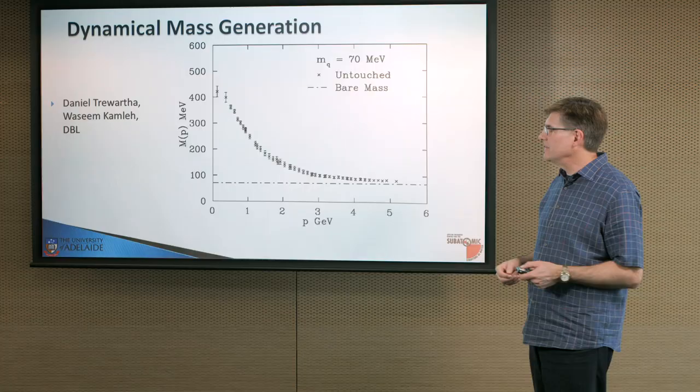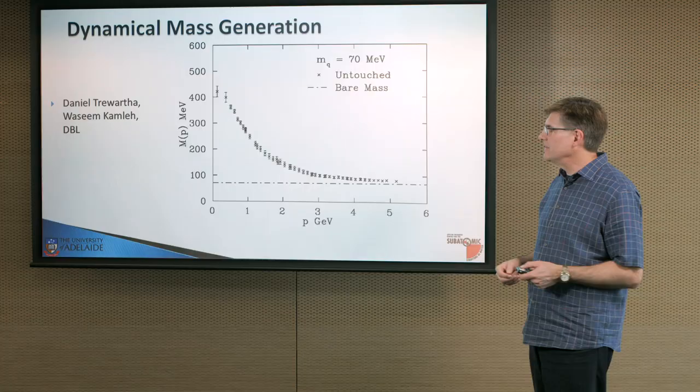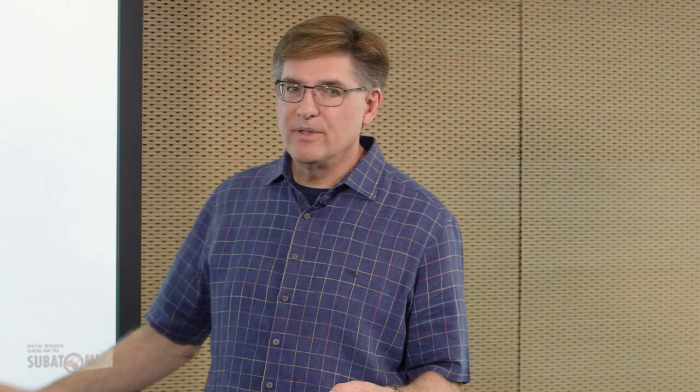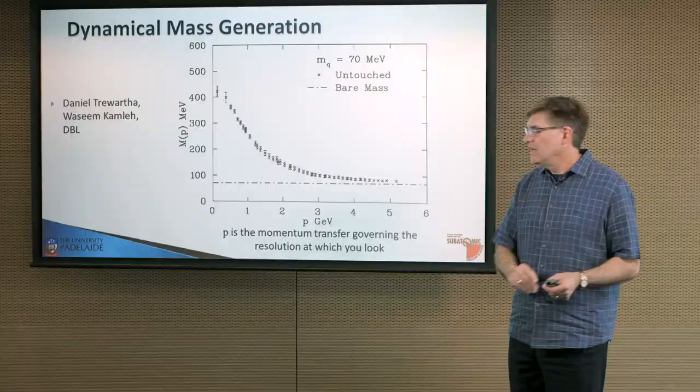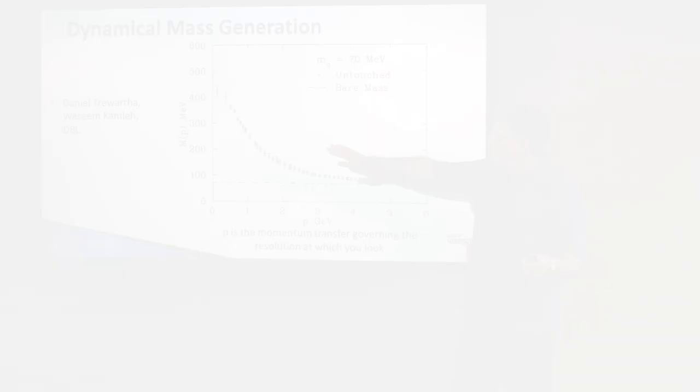Here's a plot where on the x-axis I'm using a measure of momentum transfer that governs the resolution at which you look. If you've seen a Fourier transform, you'll know that large momentum correspond to short distances. So we've got short distance here, we've got large distances here, and you can see on the y-axis we're looking at the apparent mass of a quark as it sits in the proton.